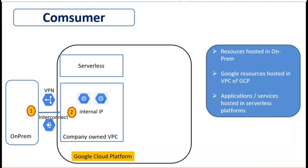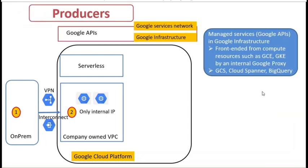Now let's move on to the producer. For the producer service, there are multiple types. Number one is the managed service — sometimes called Google API — hosted in Google infrastructure, also called the Google Service Network. Please remember that this service sits outside Google Cloud Platform. It is fronted by computing resources such as Compute Engine or Kubernetes via an internal Google proxy. Some examples include Google Cloud Storage, Cloud Spanner, and BigQuery.